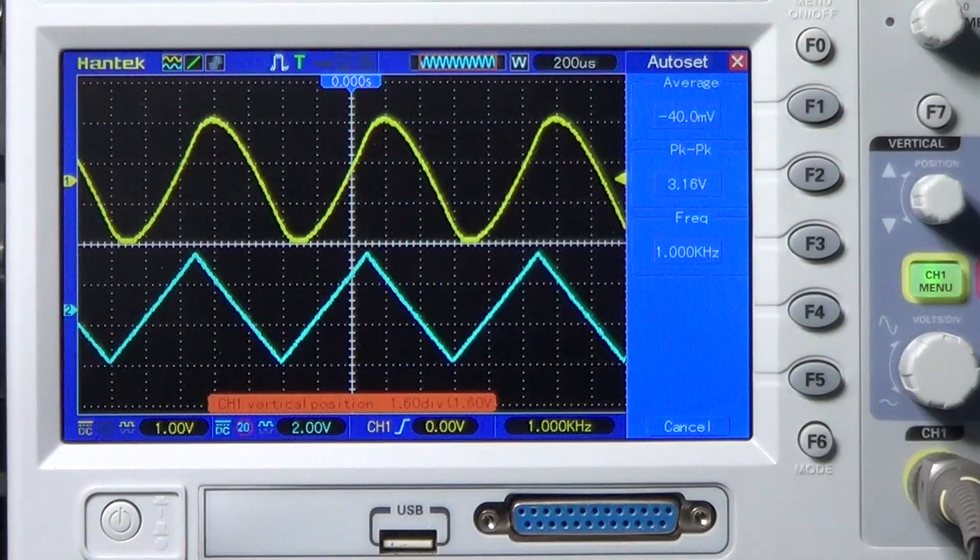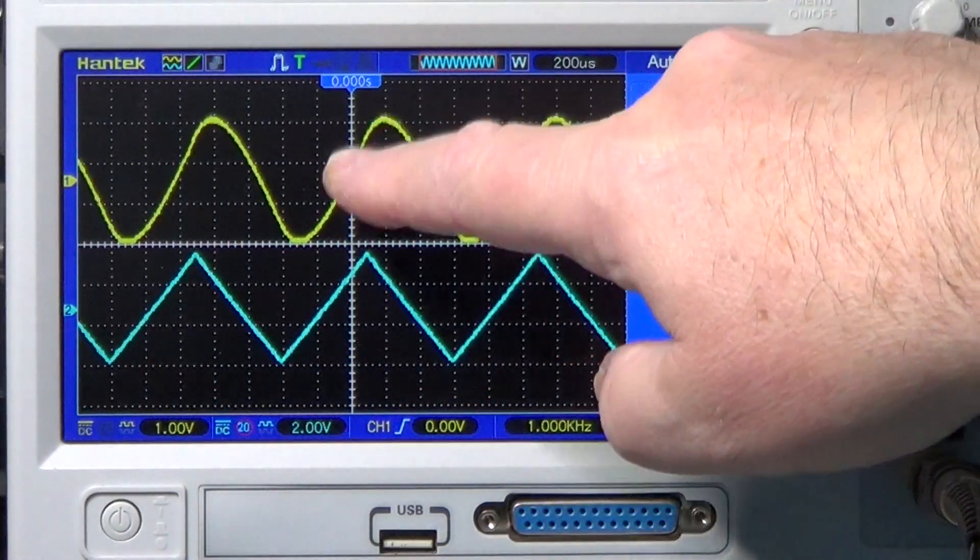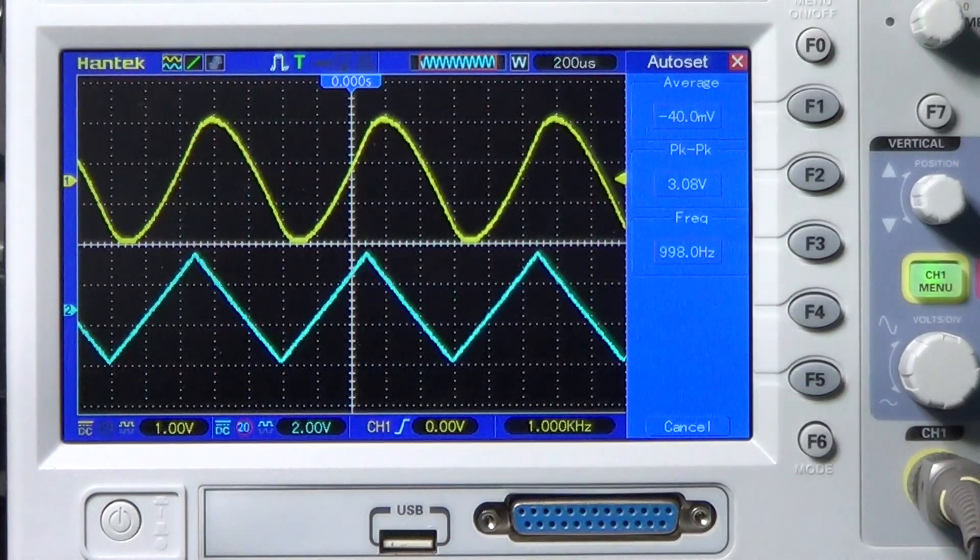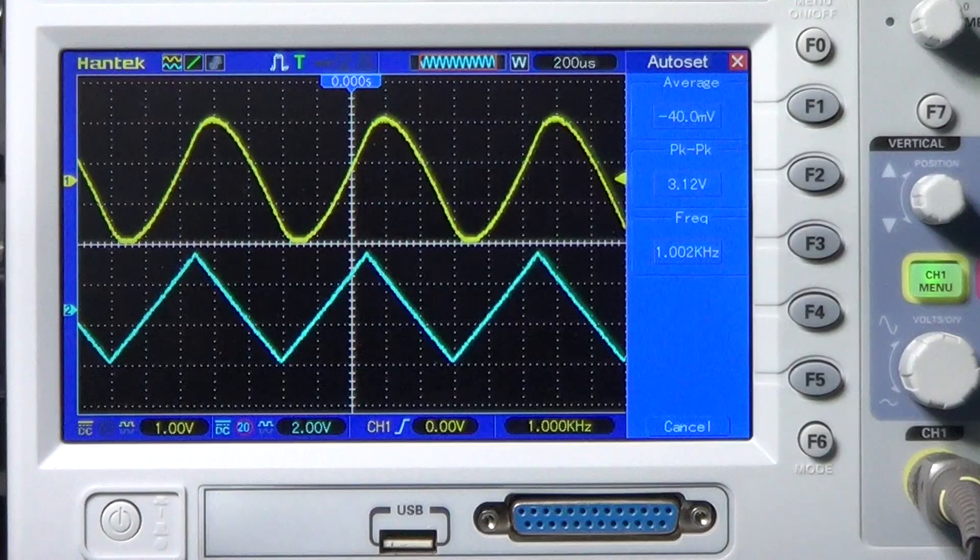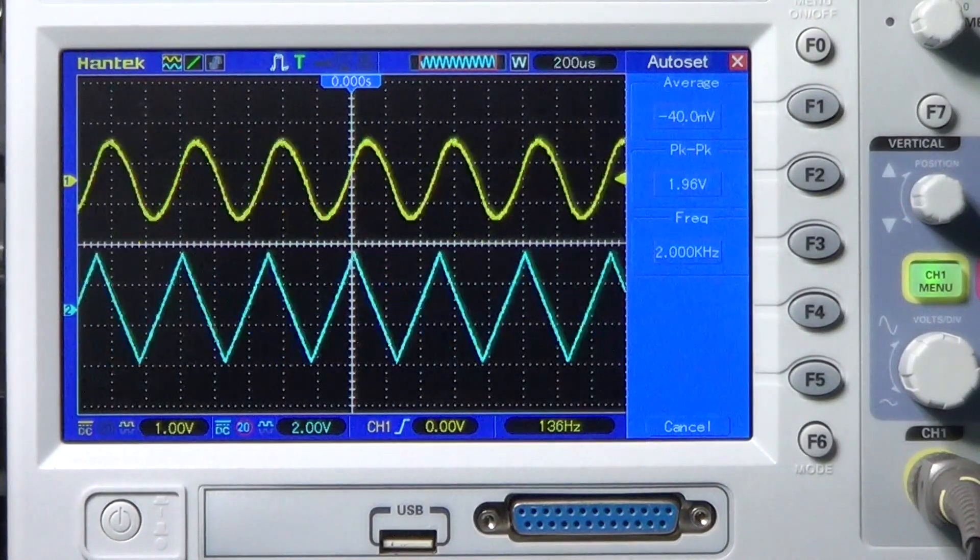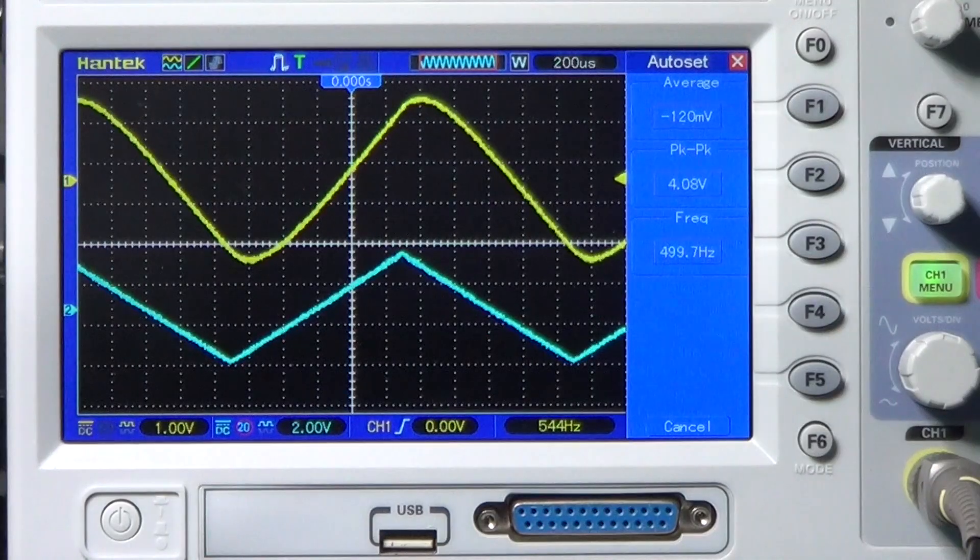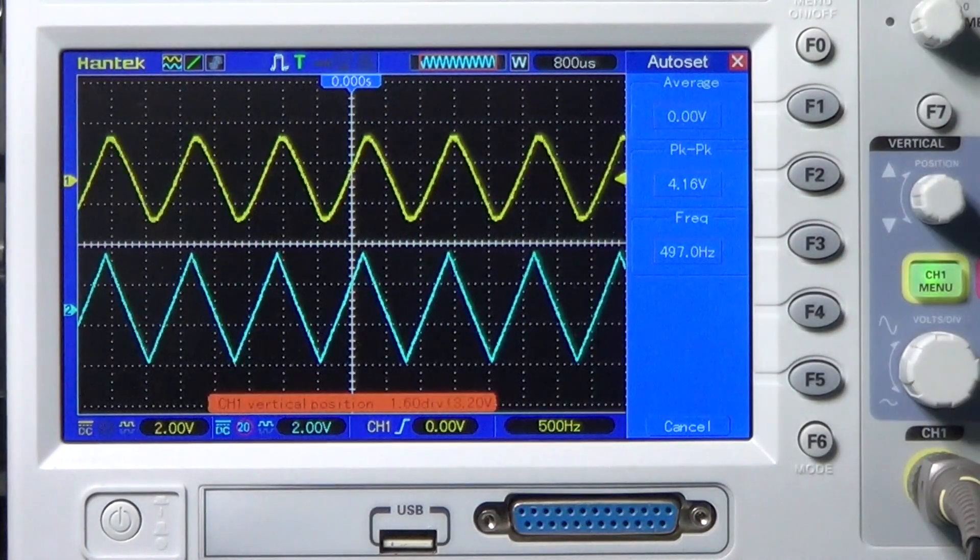And now we are at 1kHz, which is exactly the cutoff frequency of the filter. And you see, the shape of the sine wave is definitely distorted now. Look in particular at the difference between the right side of the wave and the left side. If we now go below that frequency, the amplitude of the output keeps increasing, while the shape becomes closer and closer to the triangular wave at the input.